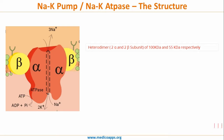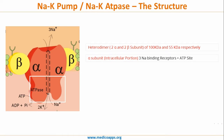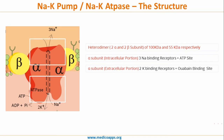The alpha subunit, as you can see in the diagram, has two parts: the intracellular and the extracellular portions. The intracellular portion has sodium binding receptors and an ATPase activity site. An easy way to remember is that since sodium has to be pumped from inside the cell, the intracellular portion has the sodium binding receptors. The extracellular portion of the alpha subunit has potassium binding receptors along with an ouabain binding site.